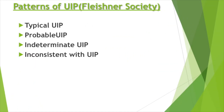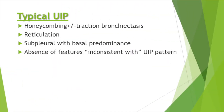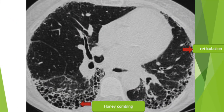According to the Fleischner Society, there are three patterns of UIP: typical, probable, and indeterminate, and an inconsistent with UIP pattern. In typical UIP, there is honeycombing with or without bronchiectasis and reticulation in subpleural location with basal predominance, and absence of features inconsistent with the UIP pattern.